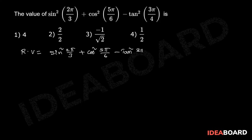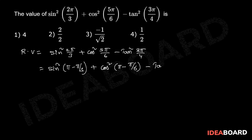That equals sin square (π minus π/3), which is 2π/3, plus cos square (π minus π/6), minus tan square (π minus π/4). For sin square (π minus θ), this is the second quadrant where sin is positive, so we get sin square π/3.